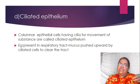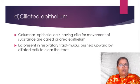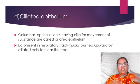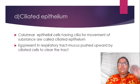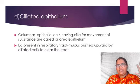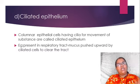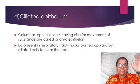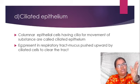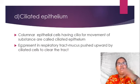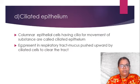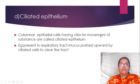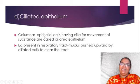The next category is ciliated epithelium. The columnar epithelium — pillar shape or cylindrical — just add some cilia on that. Cilia are the fine hair-like structures. Adding these fine hair-like structures helps with easy movement. These cilia move together. That type of epithelial tissue is called ciliated columnar epithelium, or ciliated epithelium. Ciliated epithelium has cilia for movement of substances.